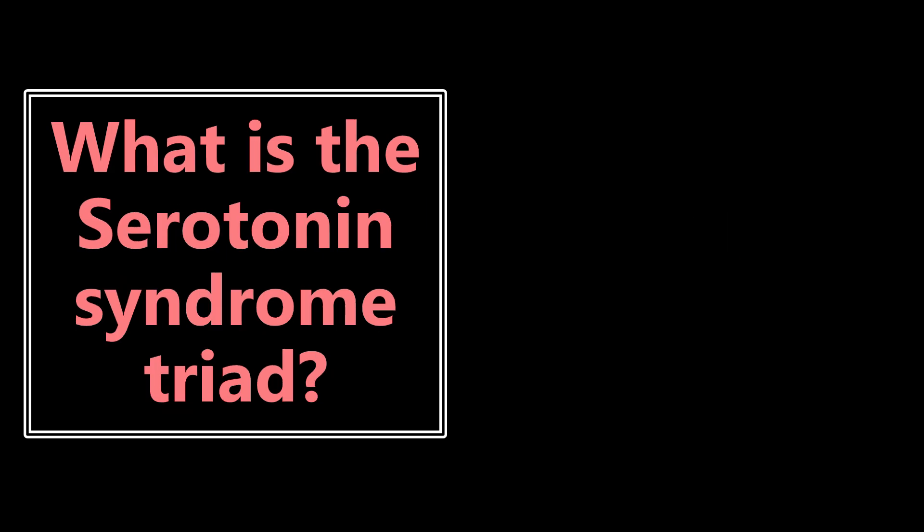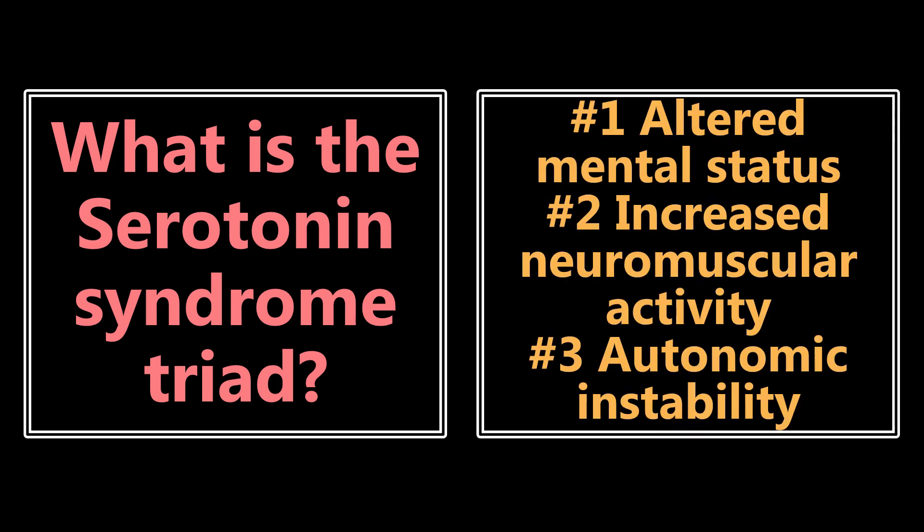What is the serotonin syndrome triad? They ask about this all the time on these exams, so you definitely want to know the constellation of symptoms. It's going to be altered mental status, increased neuromuscular activity — which may represent hyperreflexia or myoclonus — and autonomic instability. Those are the three things that, if a patient is displaying them, you want to be thinking about serotonin syndrome.